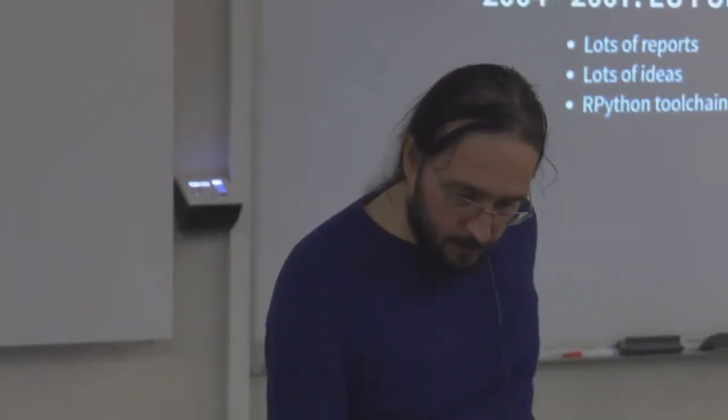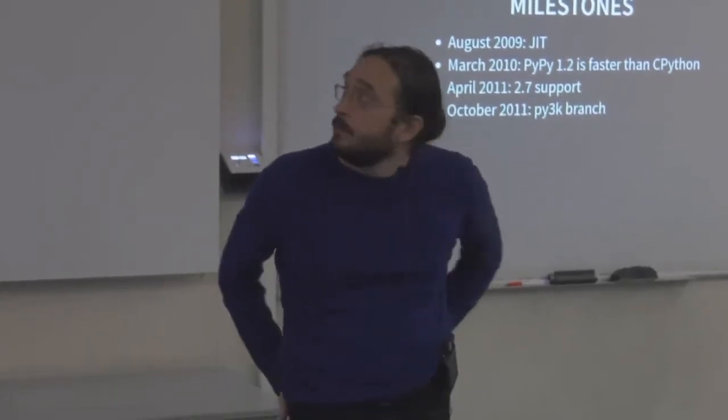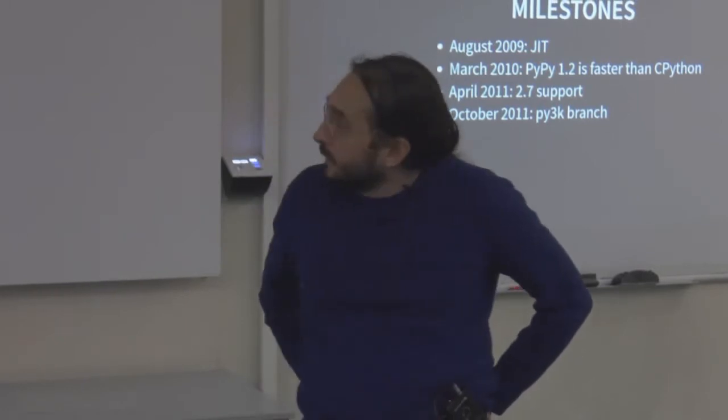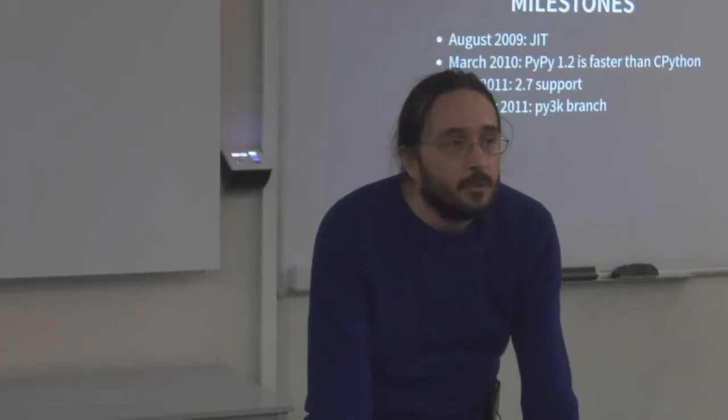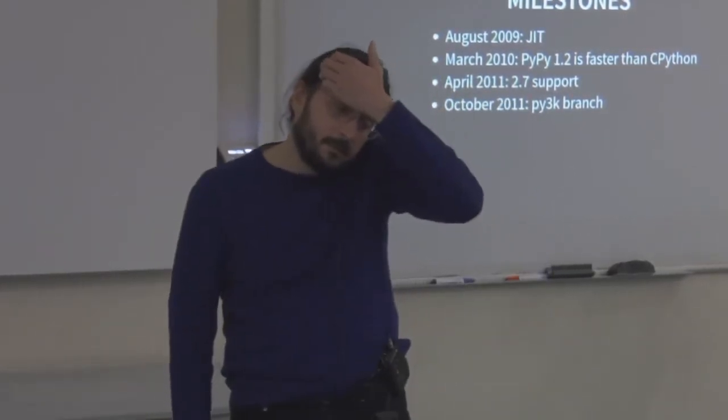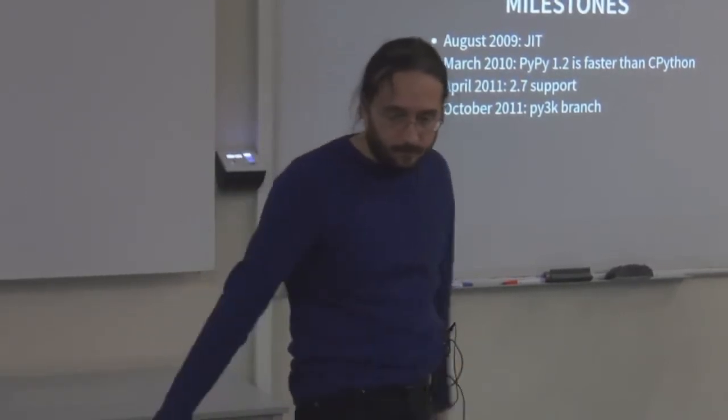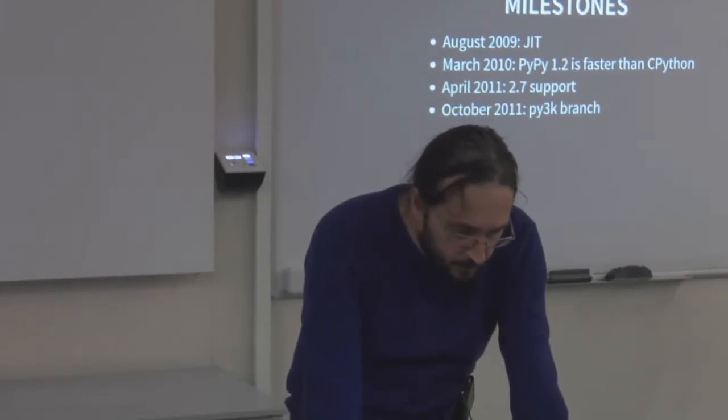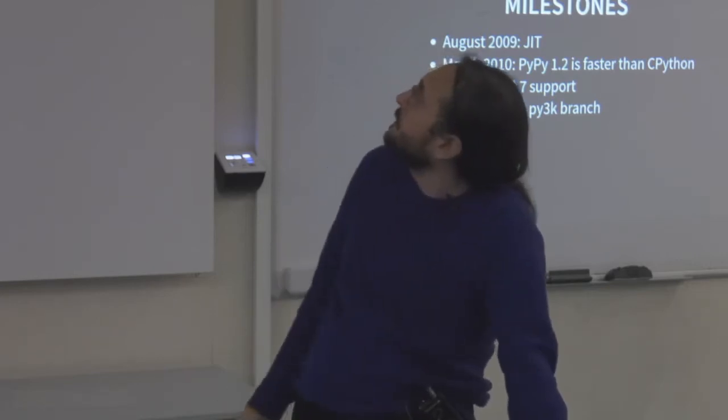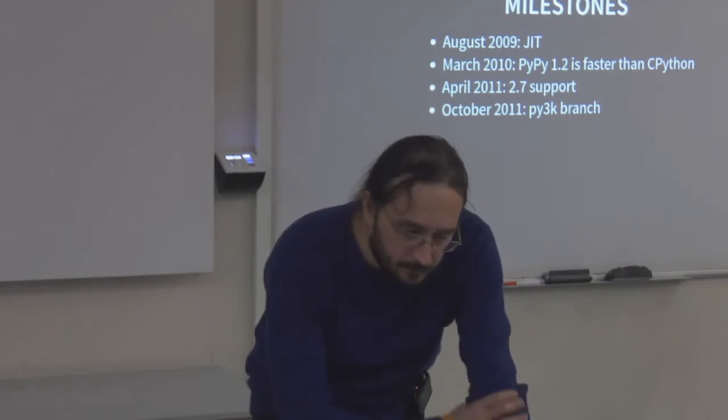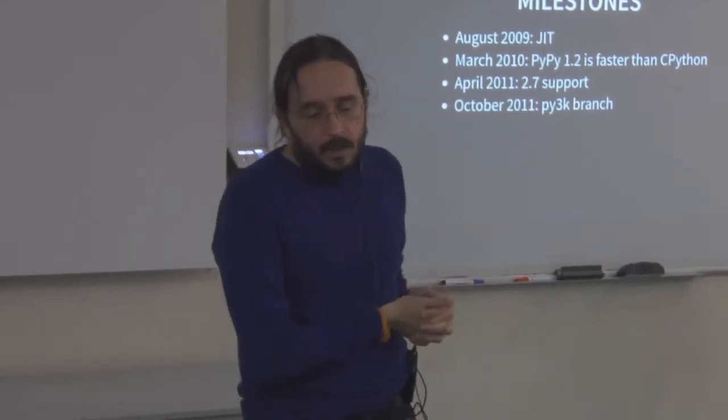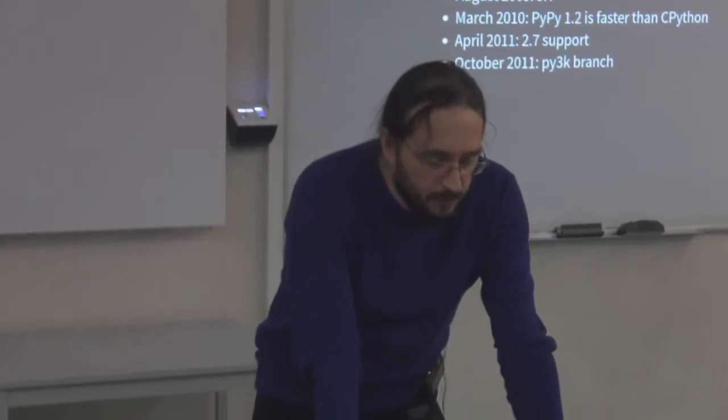The point when PyPy really started being useful is when the JIT was invented in 2009, more than six years after the start of the project. Quickly after that, performance improved considerably. The first release that was faster than CPython was in 2010. There was support for 2.7 in 2011. Work was started on supporting Python 3 already in 2011, so we started a long time back.